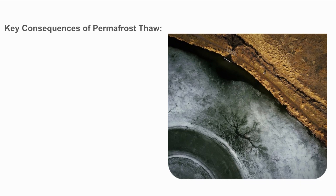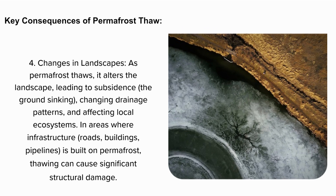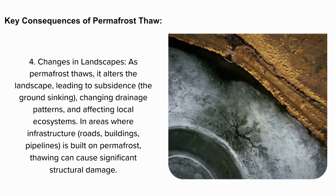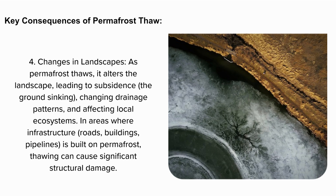4. Changes in Landscapes. As permafrost thaws, it alters the landscape, leading to subsidence — the ground sinking — changing drainage patterns, and affecting local ecosystems. In areas where infrastructure such as roads, buildings, and pipelines is built on permafrost, thawing can cause significant structural damage.